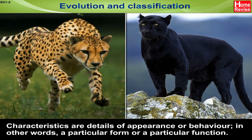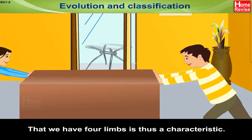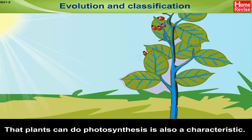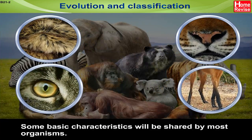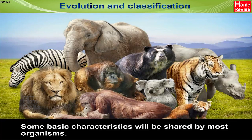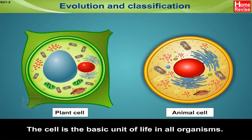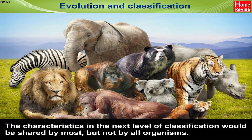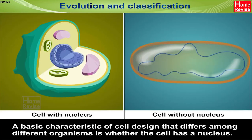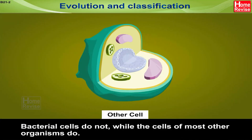For example, that we have four limbs is a characteristic. That plants can do photosynthesis is also a characteristic. Some basic characteristics will be shared by most organisms — the cell is the basic unit of life in all organisms. The characteristics in the next level of classification would be shared by most but not all organisms. A basic characteristic of cell design that differs among organisms is whether the cell has a nucleus.